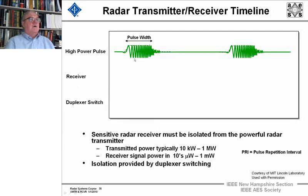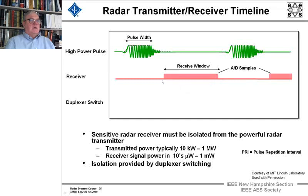First, we have the high-power pulse that's transmitted, and then we delay while we're listening for signals coming back from the radar. Then we send out another pulse. Here is the receive window where we're listening, and these are the analog-to-digital converter samples that we'll get back from targets after the transmit pulse.